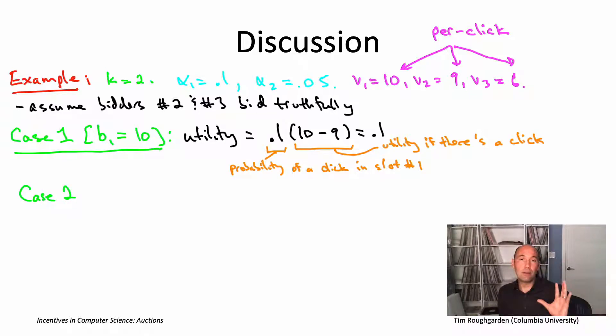Let's look at the case where bidder number one underbids and bids eight instead of ten. So what changes with this underbid? Actually, two things change. First of all, bidder number one winds up in a different slot than it would have had it bid truthfully. If it underbids and bids eight, now all of a sudden it's bidding less than bidder number two, who was bidding nine. It is bidding more than the third bidder, more than six. So it's going to be in the middle of the three bidders.